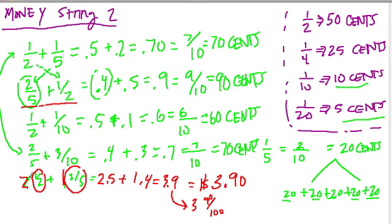Looking at all five problems in this string, we need to be careful not to associate one fifth with a nickel — that's one of the dangerous aspects of this model. Use the money model to think about why these fractions make sense, and don't lose that intuition when solving fraction sums.